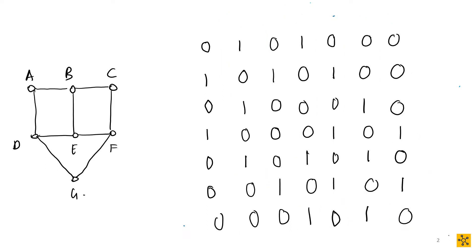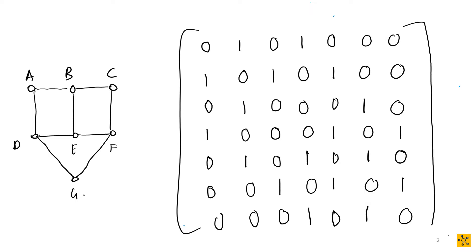The whole idea behind Moore's breadth-first search is that it looks at the adjacency matrix and activates those vertices that haven't already been activated. I'm going to demonstrate this both via the graph and via the matrix, so you can see what the adjacency matrix represents and how you can utilize it for Moore's breadth-first search. Let's start with vertex B.